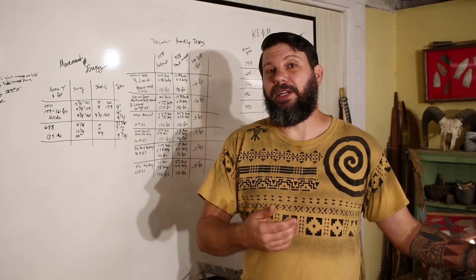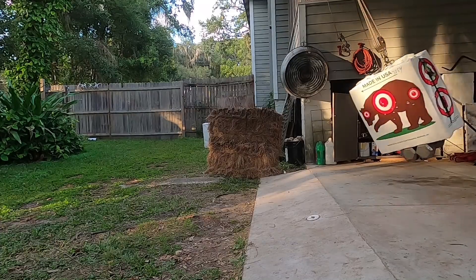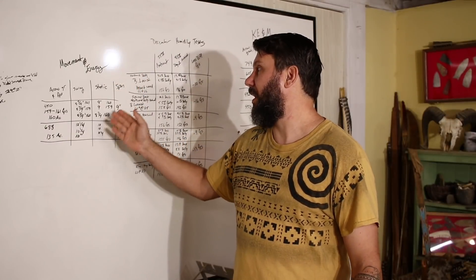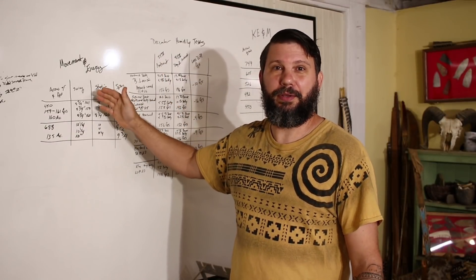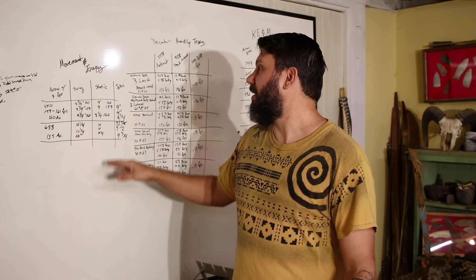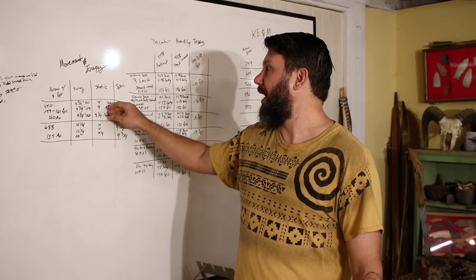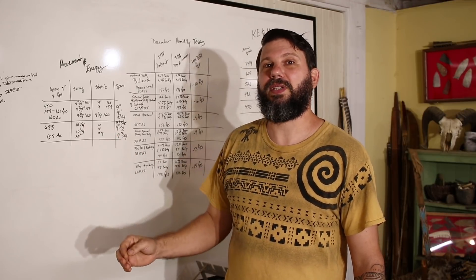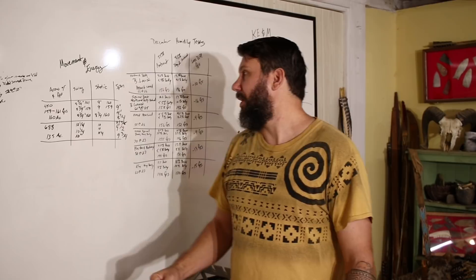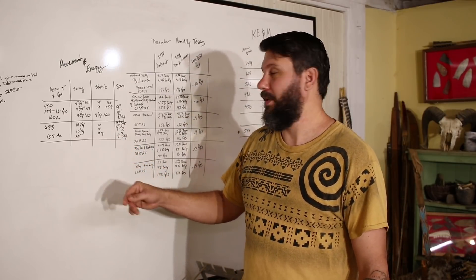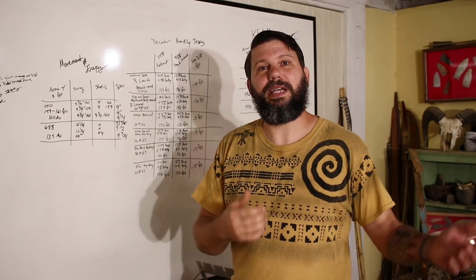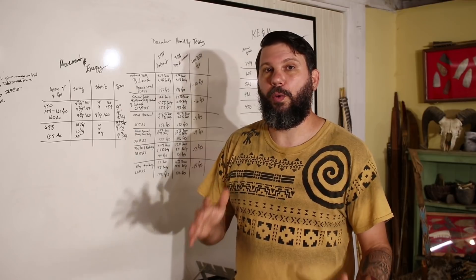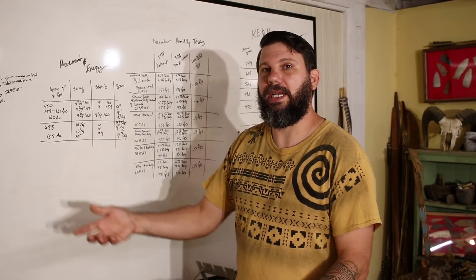Then we did a pendulum swing, getting some momentum going with the target swinging, and conducted the test again, shooting at 161, 159, and 160 fps. We got eight and three-quarters, eight and three-quarters, and eight and three-quarters every single time. Compared to the static test of nine, nine, and eight and three-quarters, if we lost anything it was very, very minute — likely we didn't lose anything at all. However, I wasn't convinced the swinging target was moving fast enough compared to an animal reacting quickly to the shot, so we decided to spin the target up.